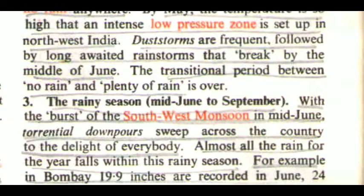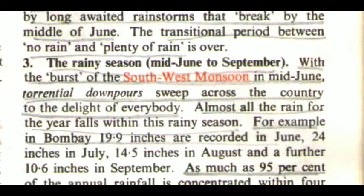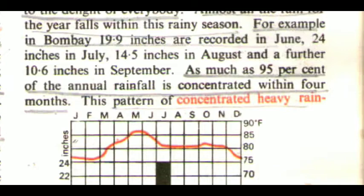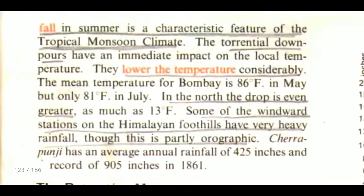The third season is the rainy season, mid-June to September. With the burst of the southwest monsoon in mid-June, torrential downpours sweep across the country. Almost all the rain for the year falls within this rainy season. For example, in Bombay, 19.9 inches are recorded in June, 24 inches in July, 14.5 inches in August, and a further 10.6 inches in September. As much as 95% of the annual rainfall is concentrated within four months. This pattern of concentrated heavy rainfall in summer is a characteristic feature of the tropical monsoon climate.